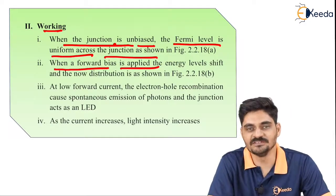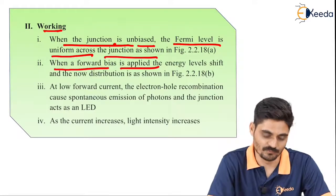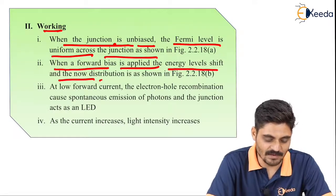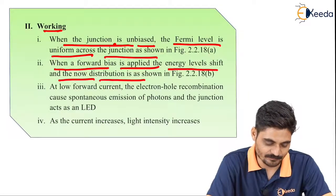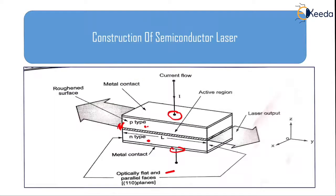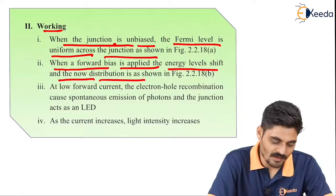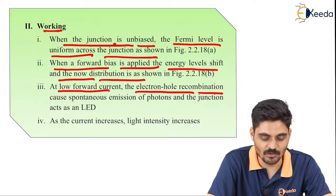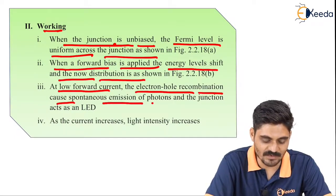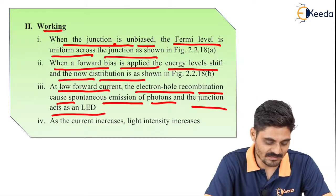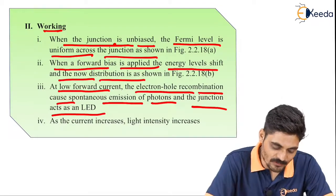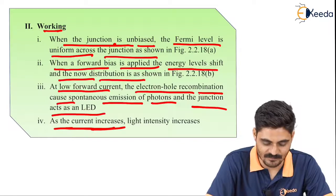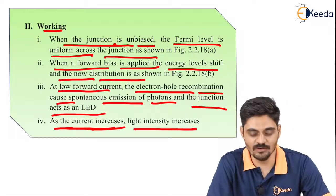When forward bias is applied, the p-n junction goes into conduction mode, and the energy levels shift. At low forward current, electron-hole recombination causes spontaneous emission of photons, and the junction acts as an LED — a light emitting diode. As the current increases, light intensity also increases.